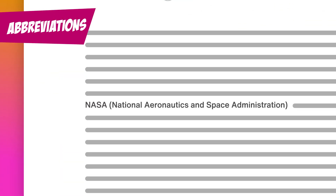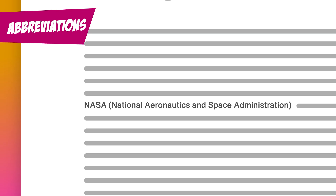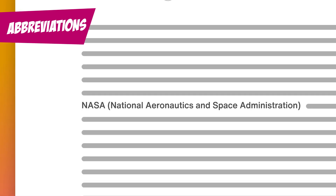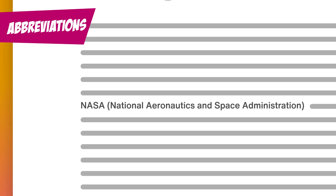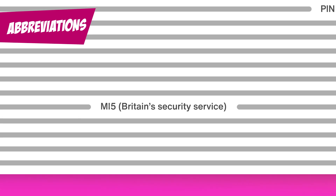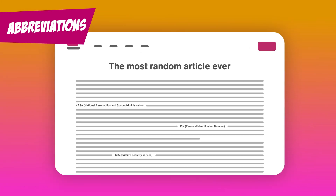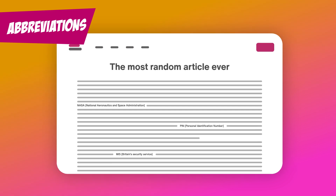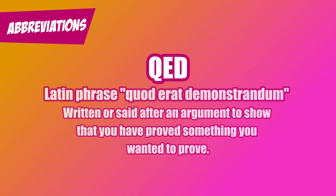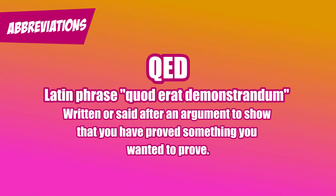It's not hard to expand the full meaning of any abbreviation the first time it appears on a page, so screen readers and all users can follow along without confusion. Think of it like a quick introduction: NASA — National Aeronautics and Space Administration; PIN — Personal Identification Number; or MI5 — Britain's Security Service. That way, everyone's on the same page and you're not leaving anyone behind in a haze of alphabet soup. QED — Latin phrase, Quod Erat Demonstrandum: written or said after an argument to show that you have proved something you wanted to prove.